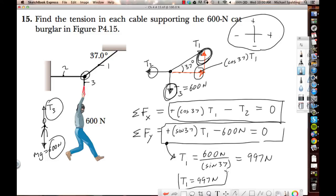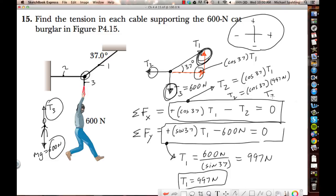Now come up here to this equation. What's the only thing missing in the x equation? T2, because we now know what T1 is. So T2 is cosine 37 T1, and we know that T1 is 997. So T2 is going to be cosine 37 times 997, which gives us T2 equal to 796.